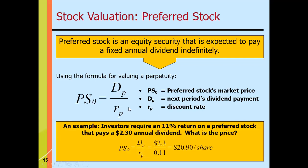As an example, investors require an 11% return on a preferred stock that pays a $2.30 annual dividend. Using the formula and substituting the values: $2.30 divided by 0.11 equals $20.90 per share. This is the value of the preferred stock.